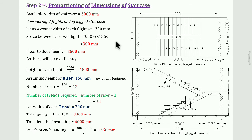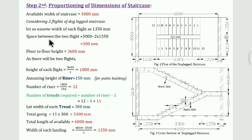The width of each flight is assumed as 1350 mm (minimum criteria). There are two flights, so total width used by flights = 2 × 1350 = 2700 mm. Space between the two flights = total width of staircase minus 2 × 1350 = 3000 − 2700 = 300 mm. So the clear space between the two flights is 300 mm.